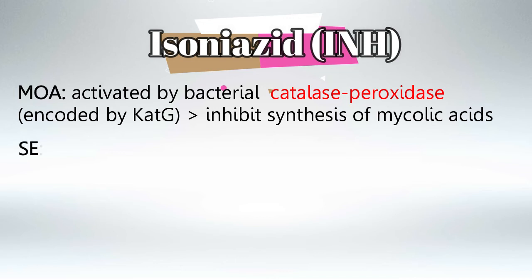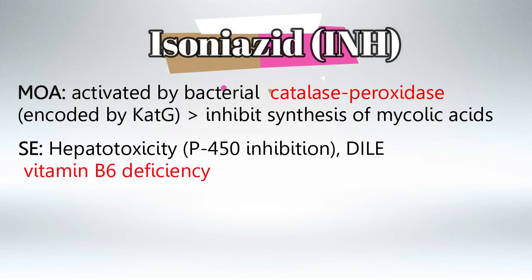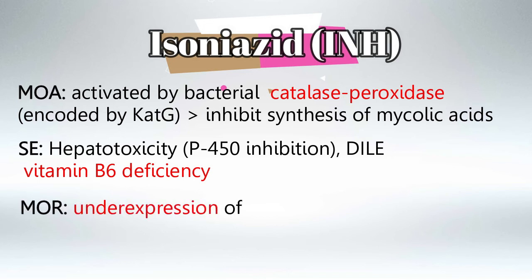The famous side effects for isoniazid are hepatotoxicity by inhibiting cytochrome P450, drug-induced lupus — which is very important to know — and vitamin B6 deficiency, which is also very important to know. The mechanism of resistance of isoniazid is under-expression of the KATG gene.